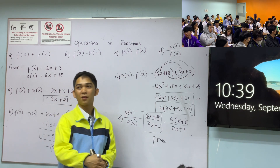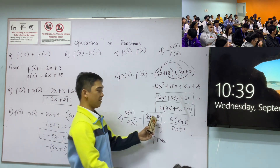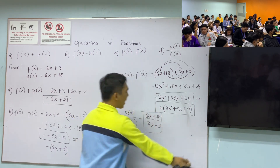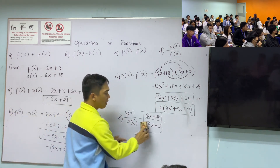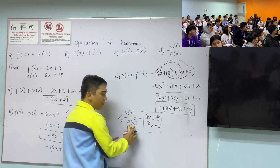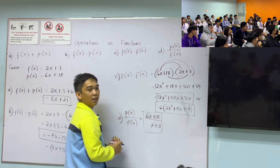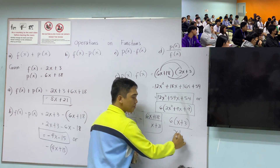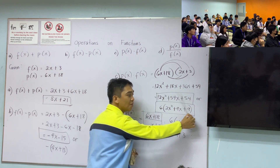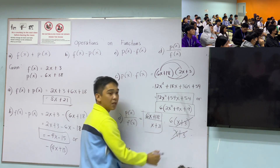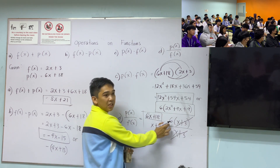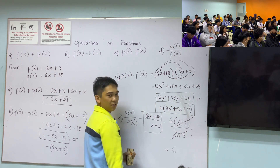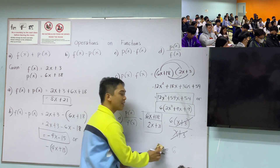This is already the final answer — it can't be simplified further. But for example, if f(x) were just x + 3 instead, then we'd have 6(x + 3) over (x + 3), and (x + 3) cancels, giving the answer as 6. But with 2x + 3 in the denominator, there's nothing to cancel — don't force it.